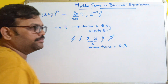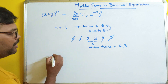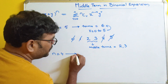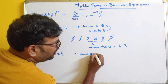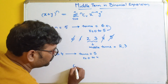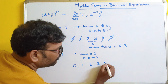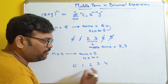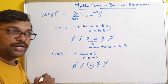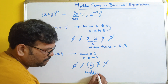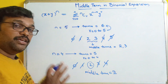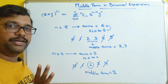Similarly, if n = 4, how many terms will there be? The terms will be five, with r going from 0 to 4: 0, 1, 2, 3, 4. The middle value here is the third one — so the middle term will be term number 3. This means we have two formulas to find the middle term: one when n is odd, and one when n is even.